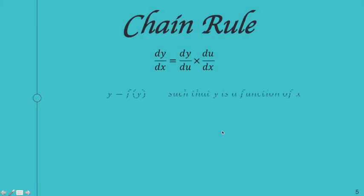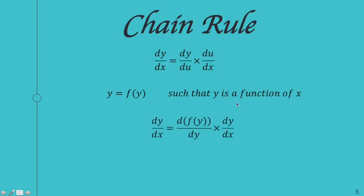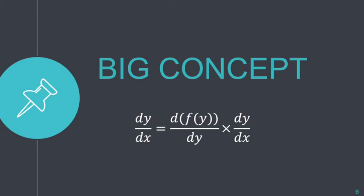We can now come up with a generalization: if y = f(y), assuming y is a function of x, the composite function is f(f(x)). Applying the chain rule: dy/dx = [derivative of f(y) with respect to y] × dy/dx. This is an important concept we will use for implicit differentiation.